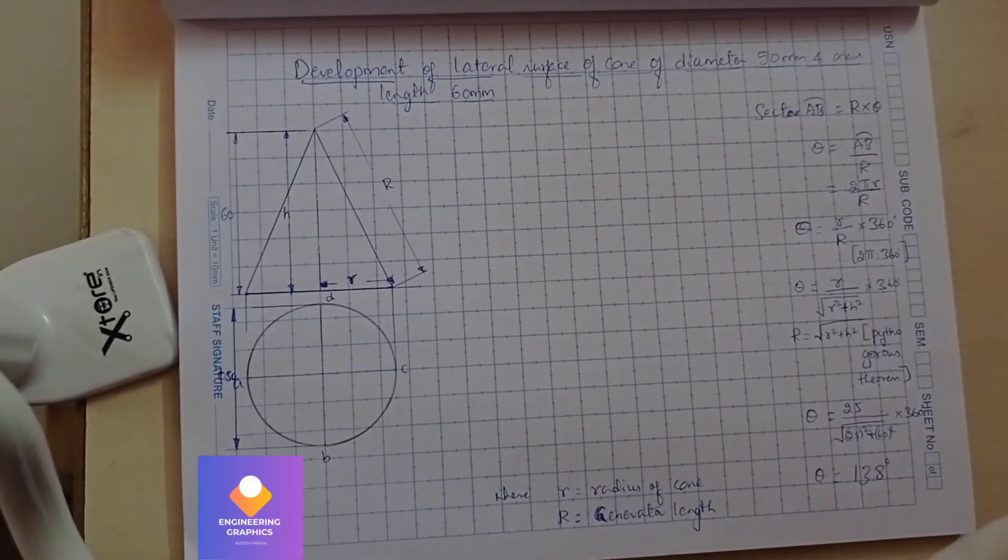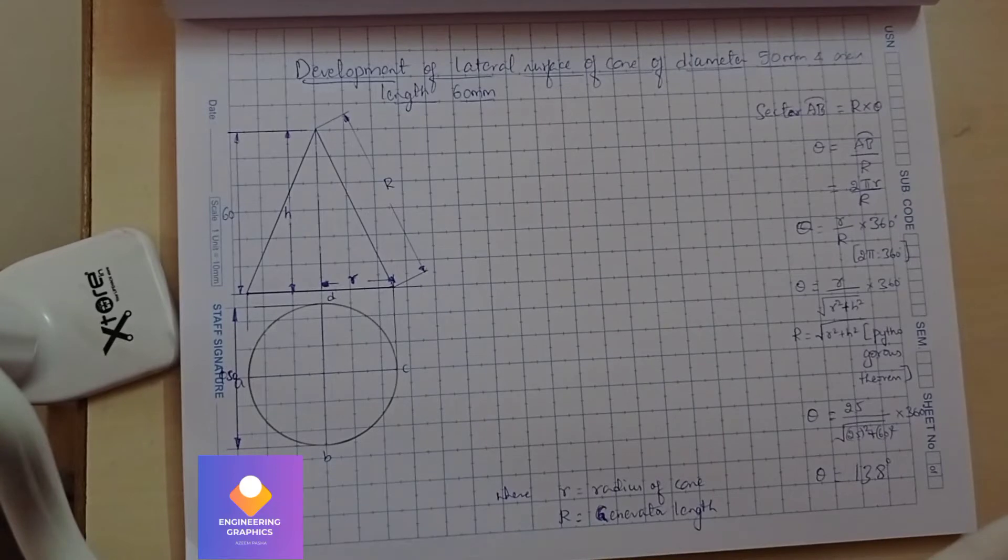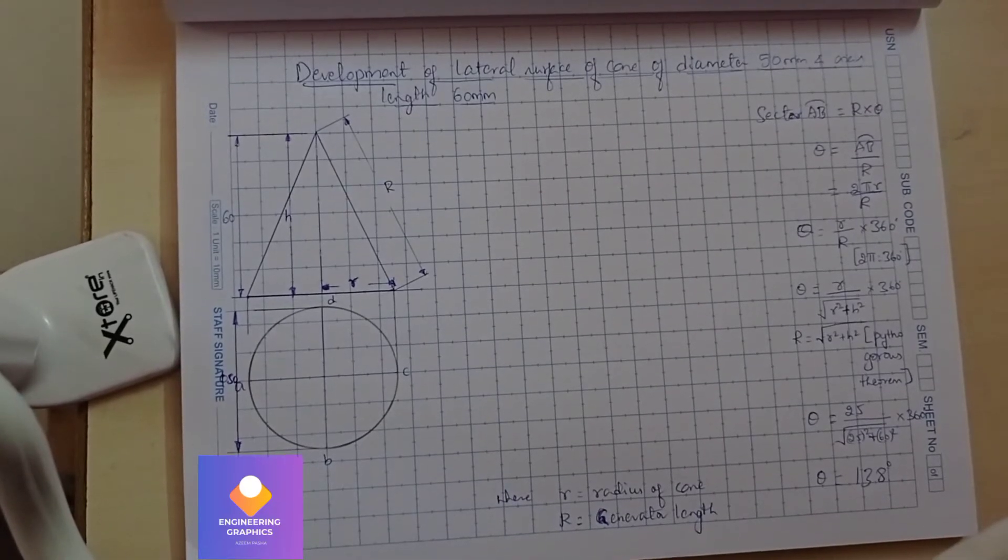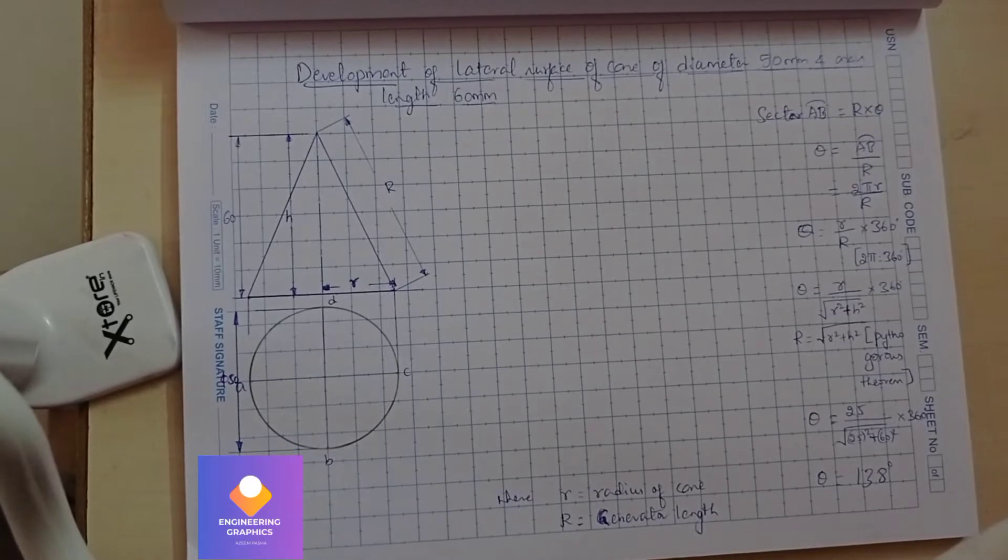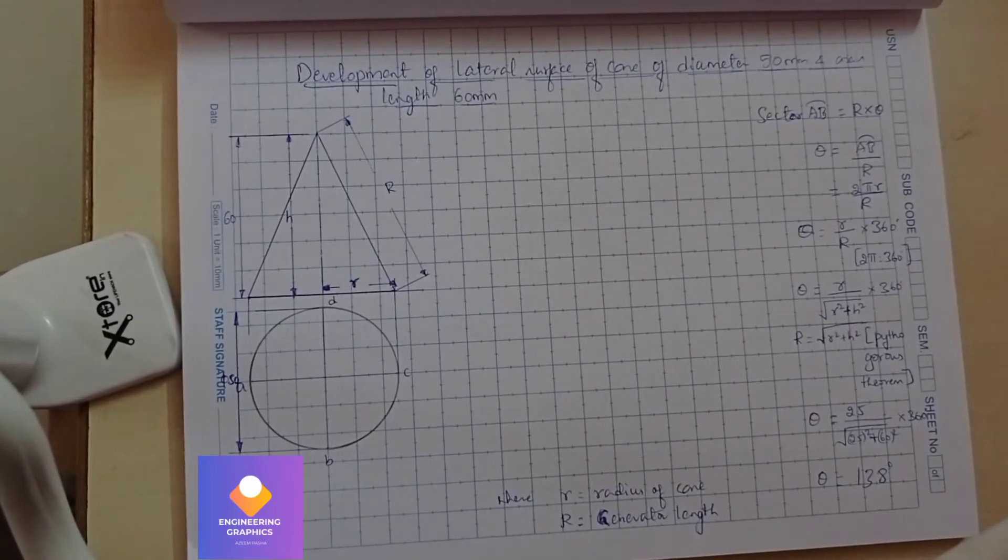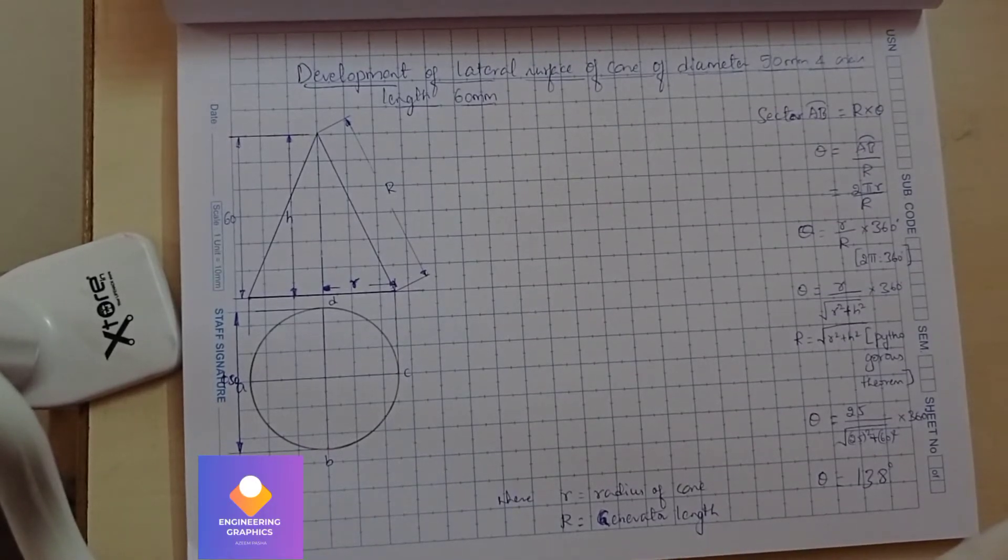Development of lateral surface of a cone: diameter 50mm and axis length 60mm. We have constructed both the top view and the front view. Here, R defines the radius of the cone.